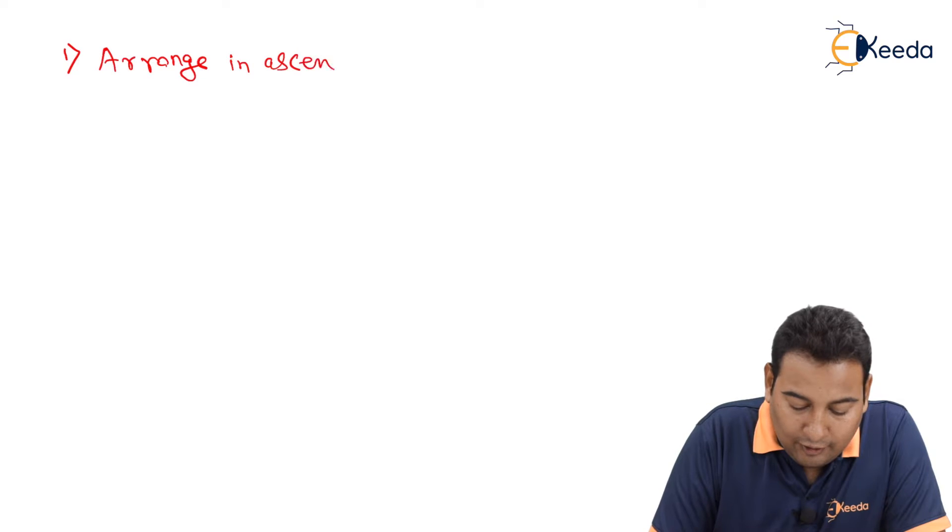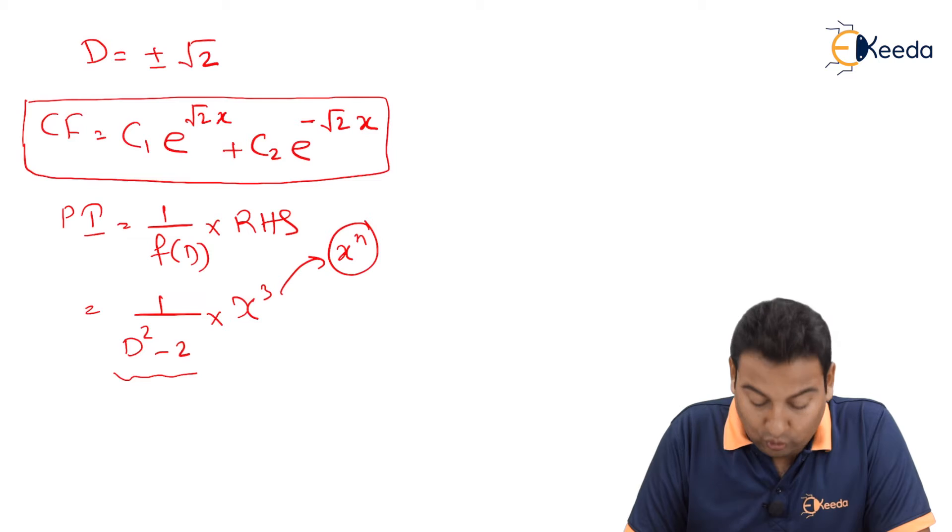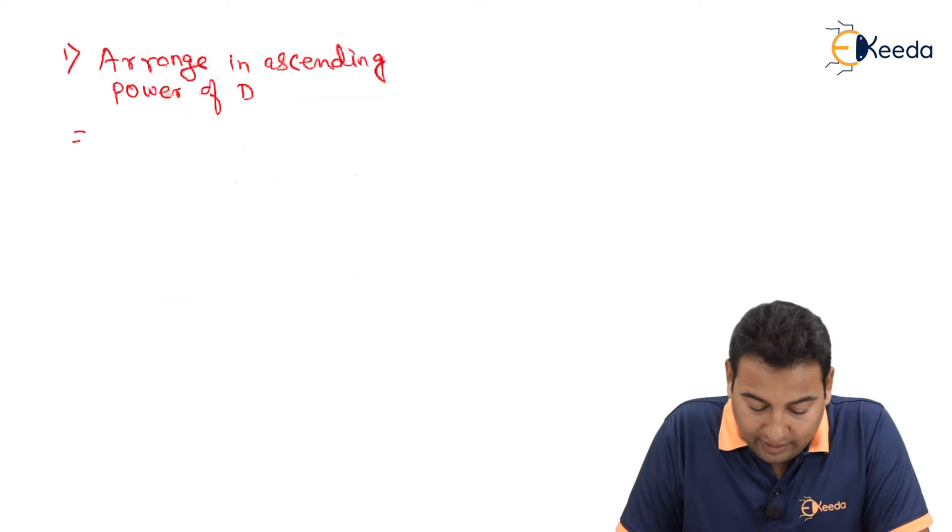Let's start with the first one. Arrange in the ascending power of D. Here there are two terms, D² minus 2. Let's arrange them in ascending order.